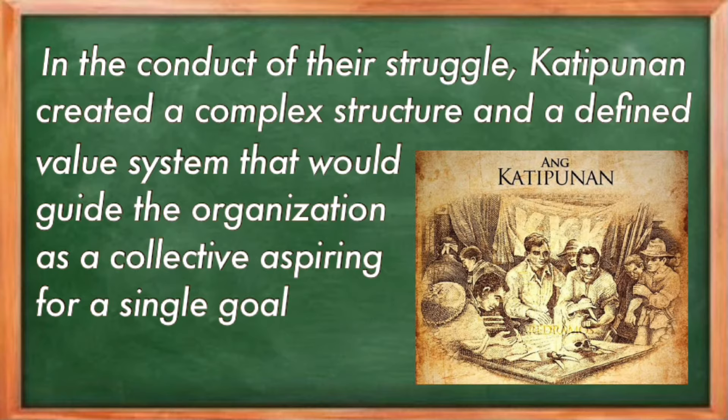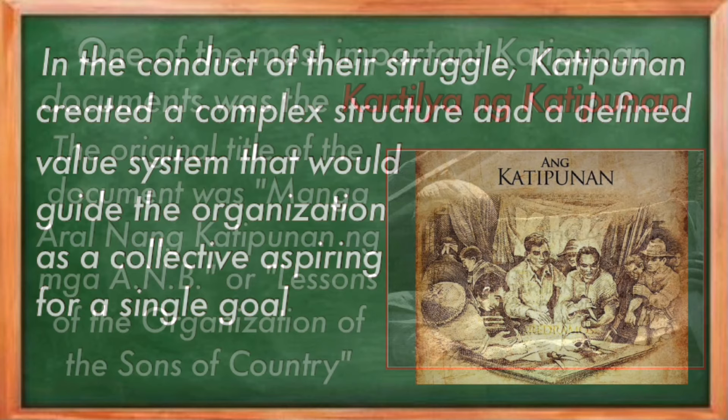The propaganda movement led by ilustrados like Marcelo H. del Pilar, Graciano Lopez Jaena, and Jose Rizal did not envision a total separation of the Philippines from Spain, but only demanded equal rights, representation, and protection from the abuses of the friars. In the conduct of their struggle, the Katipunan created a complex structure and a defined value system that would guide the organization as a collective aspiring for a single goal.